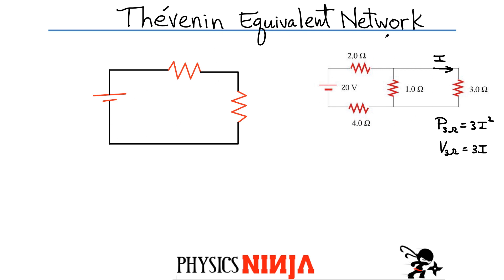I can write the power as three multiplied by I squared. I can also find the voltage across the three ohm resistor — that would simply be three times the current. So you can do a lot once you know the current flowing through it. And instead of using Kirchhoff's laws to solve this circuit, I'm going to use an equivalent Thevenin network, which is represented here on the left hand side. The theorem says that any combination of resistors and voltages can be represented using an equivalent network like this.